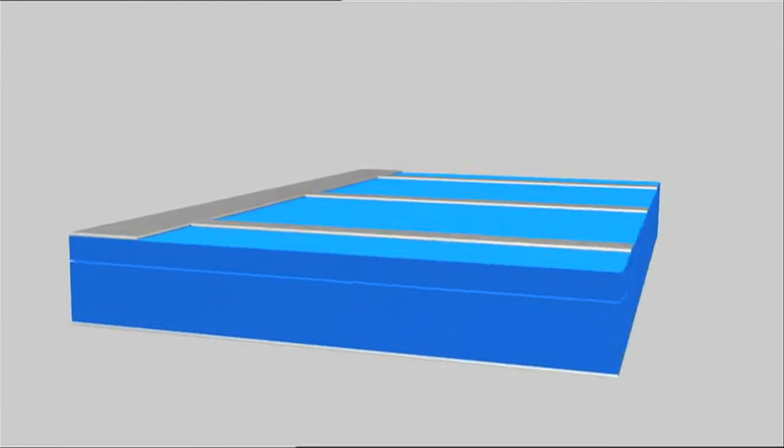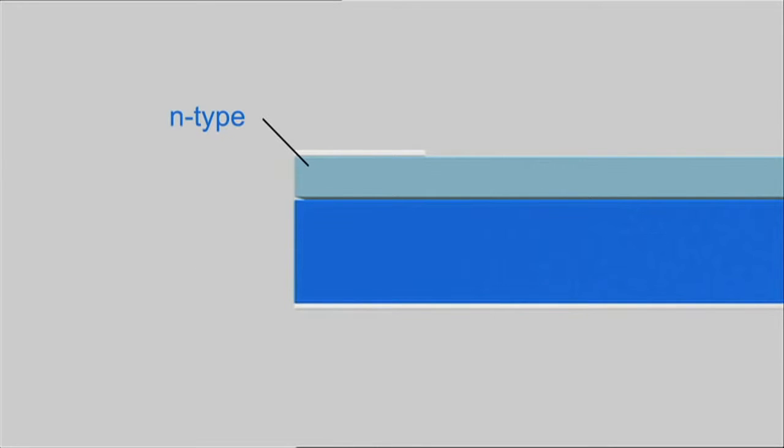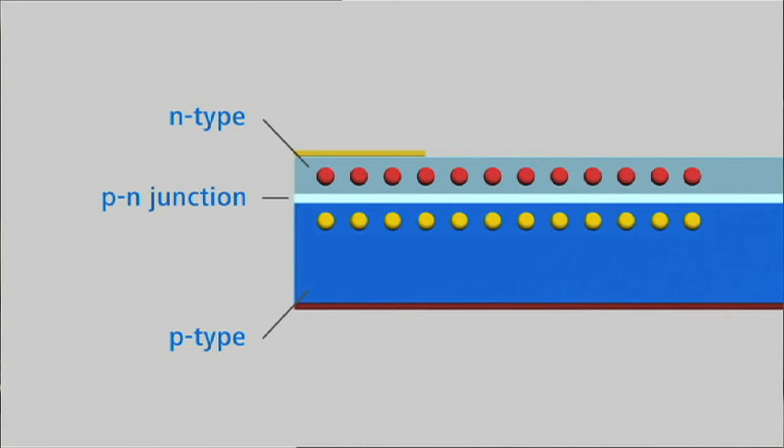The next step in solar cell production is diffusion. Here, a negatively charged phosphorus layer is added to each wafer's positively charged layer. In an oven heated to some 900 degrees centigrade, phosphorus atoms are injected with the help of nitrogen. The gaseous phosphorus-nitrogen mix is deposited on the wafer.